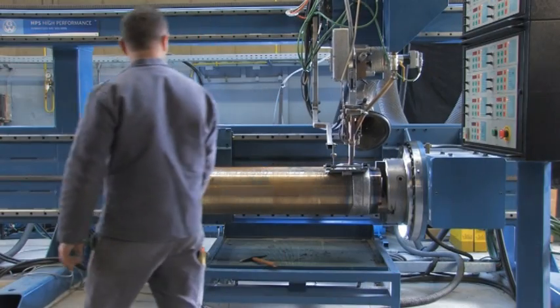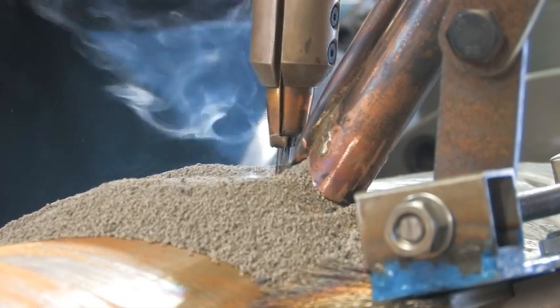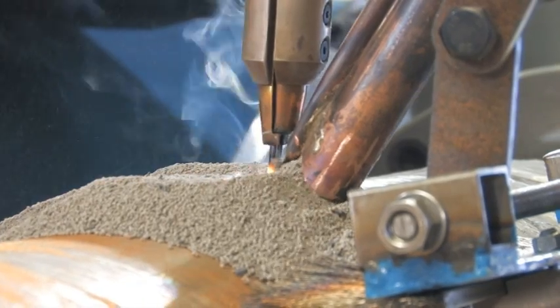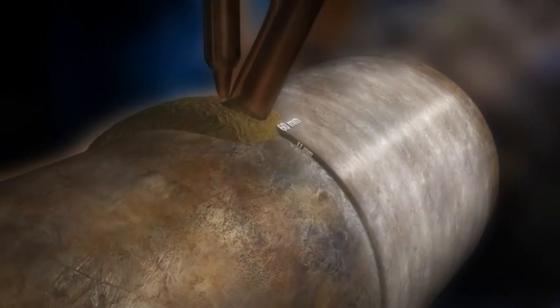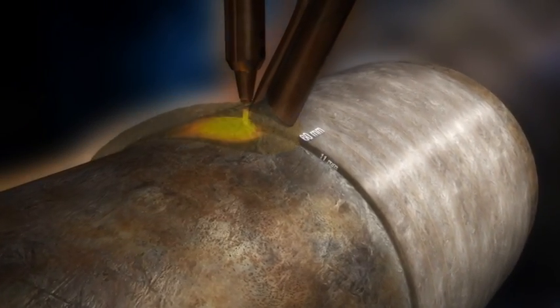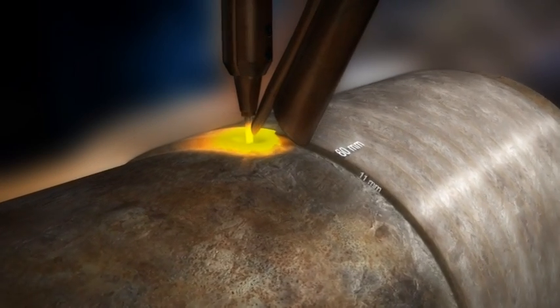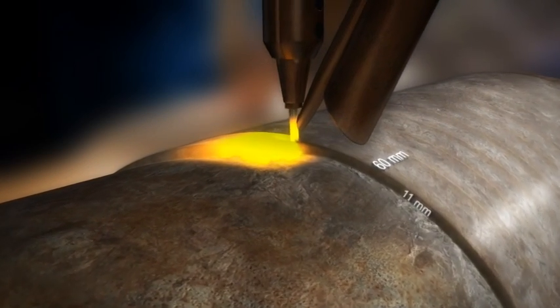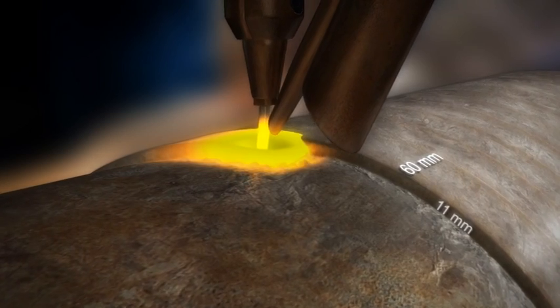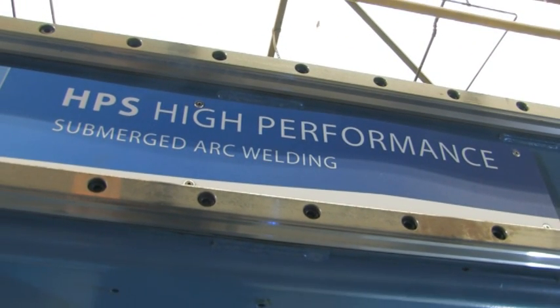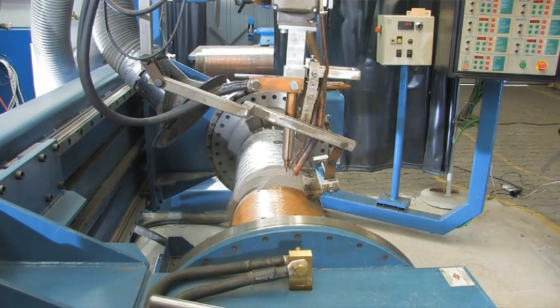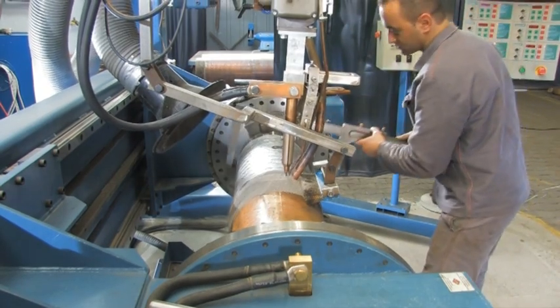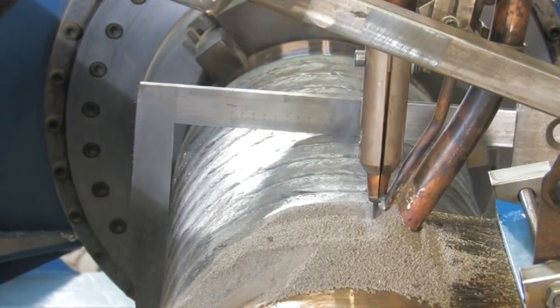A technology which has proven its worth can be improved even more by welding procedures developed by Gustav Wiegert. In one pass we can apply a usable wear-resistant coating with a thickness of up to 11 mm. We call this welding procedure GWHPS High Performance Submerged Arc Welding. It was patented in 2007.